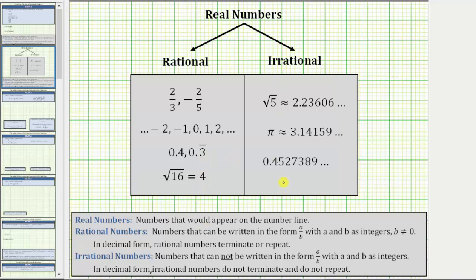Looking at the examples of the irrational numbers, here we have the square root of five, which we can see as a decimal does not terminate — the digits continue forever but none of them repeat — making the square root of five irrational. In fact, whenever we take the square root of a number and the radicand, or number under the square root, is not a perfect square, it will be irrational. Pi is irrational because as a decimal it does not terminate and does not repeat, and the same for this decimal here.